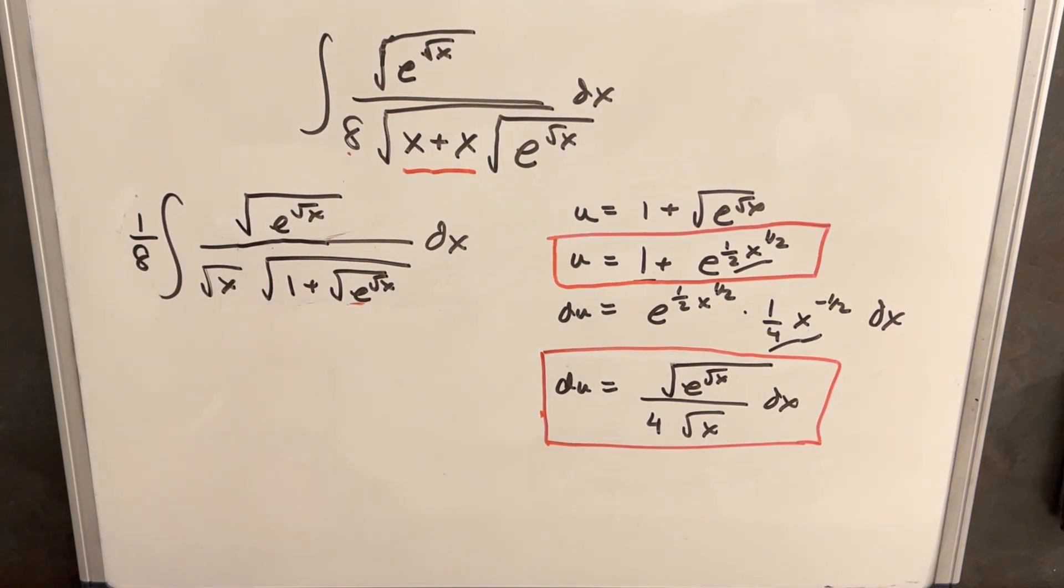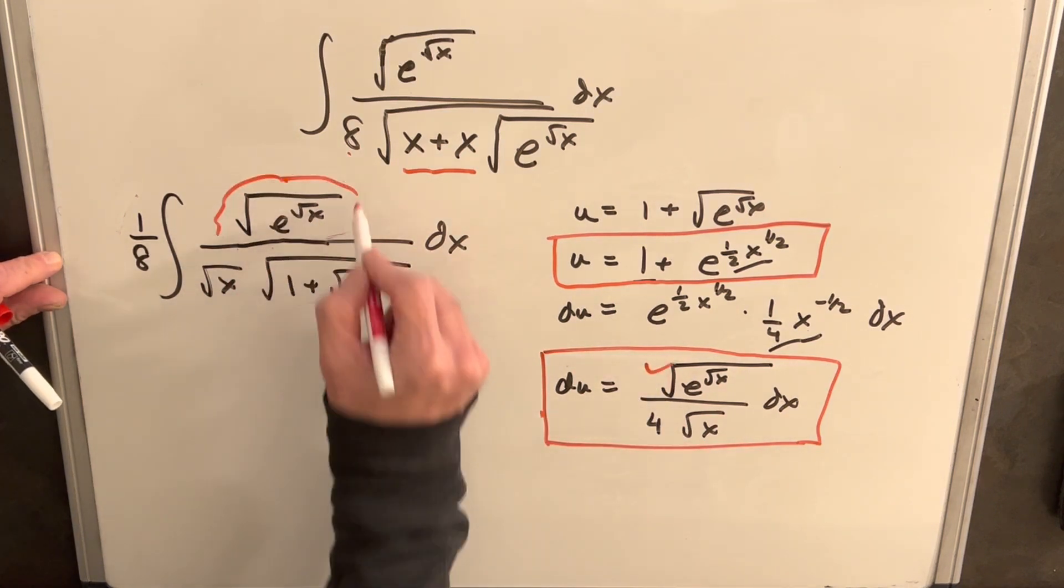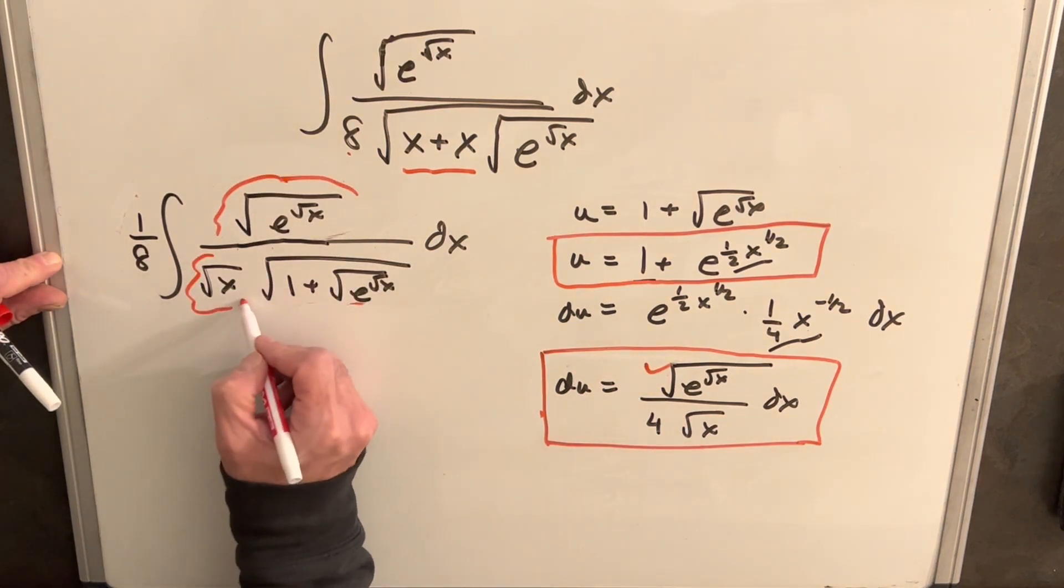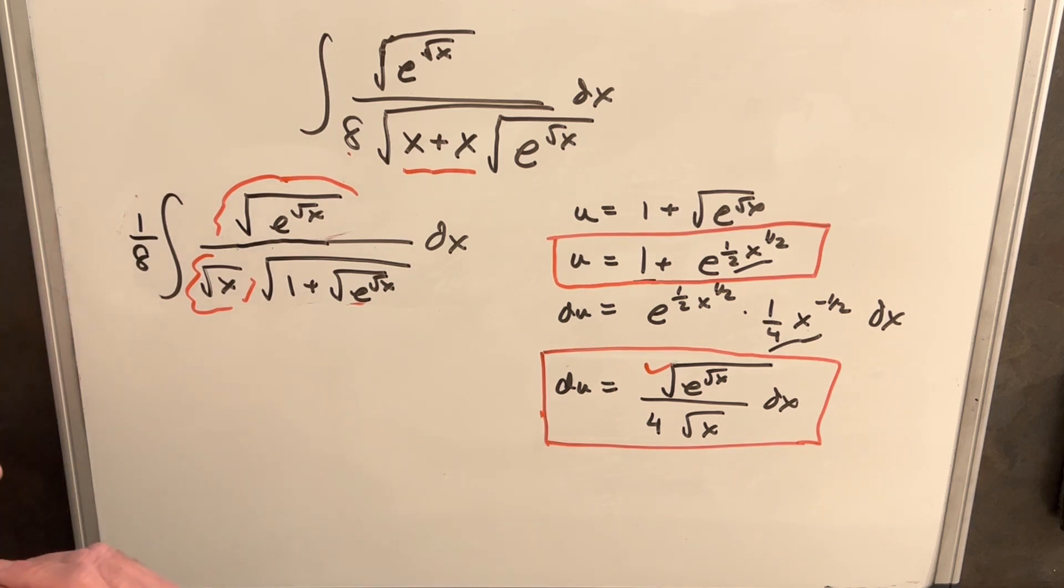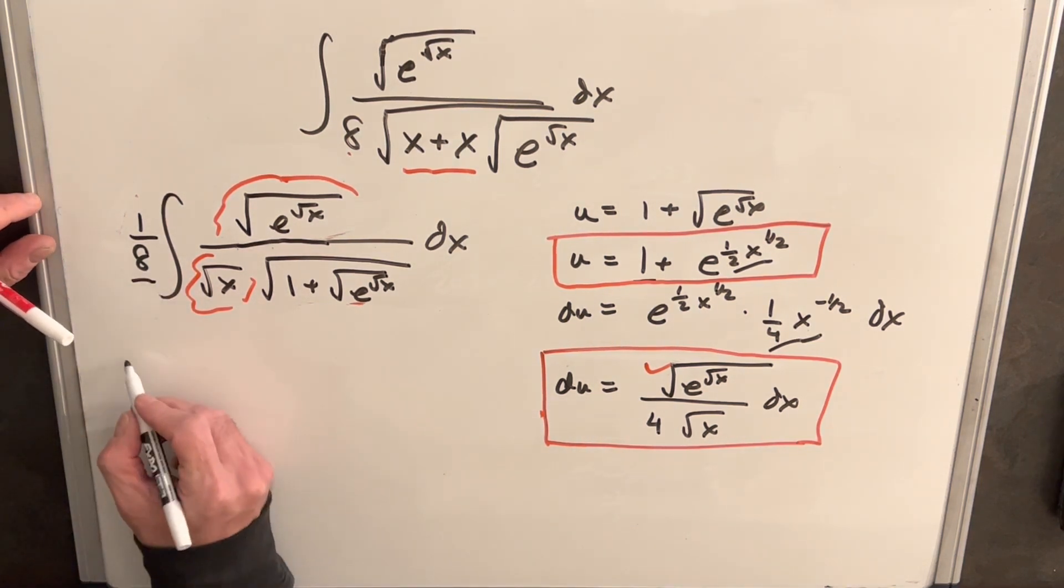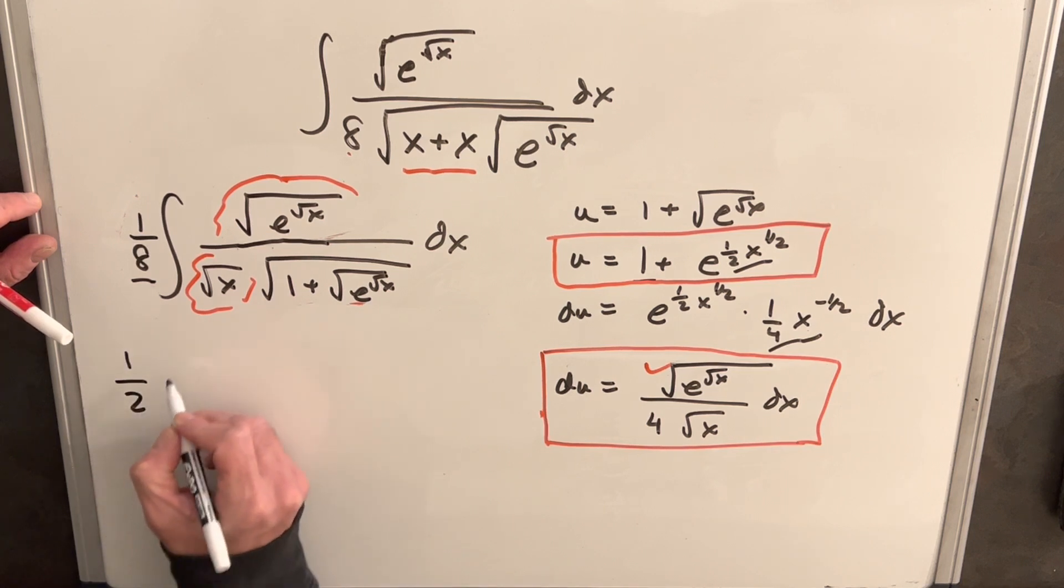So now before doing our substitution, I'm going to rewrite this a little bit. Notice that we have really everything we need for our du here. We have this, this piece in the numerator, and we have already have our square root of x here. I just want to create this 1 fourth. So what I'm going to do to do that is I'm going to, so I'm going to split up this 1 eighth.